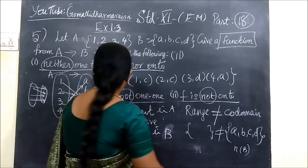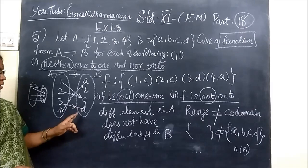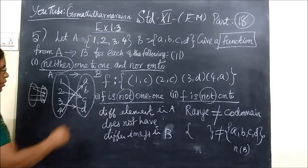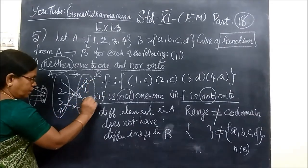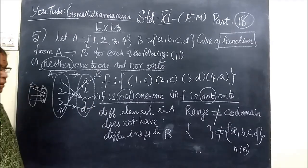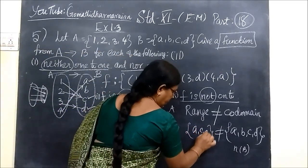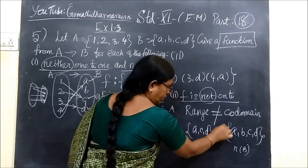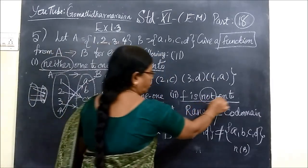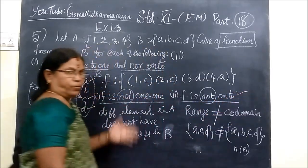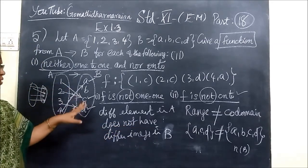And here, what is the range? The images selected give the range as {A, C, D}. This is not equal to the codomain {A, B, C, D}. So it is not an onto function. We have constructed such a function.